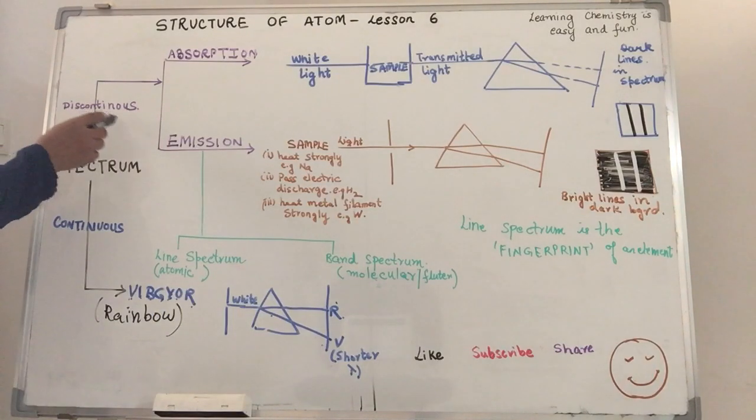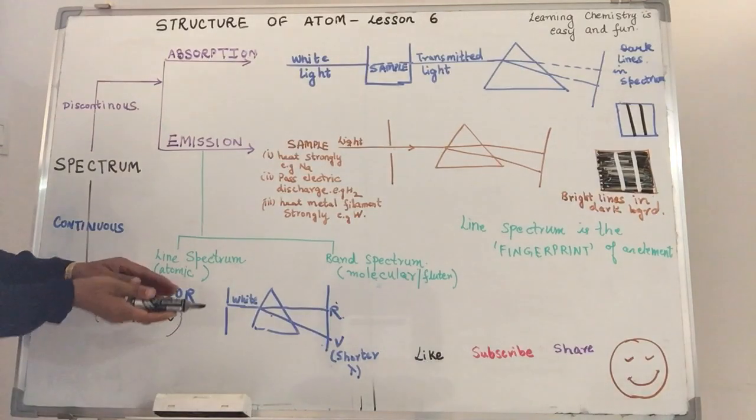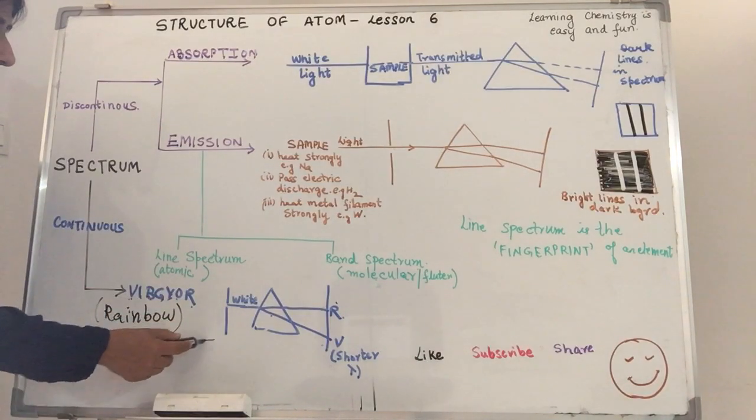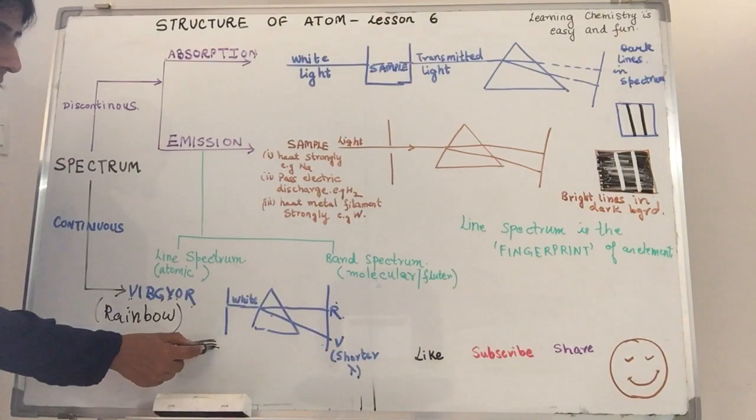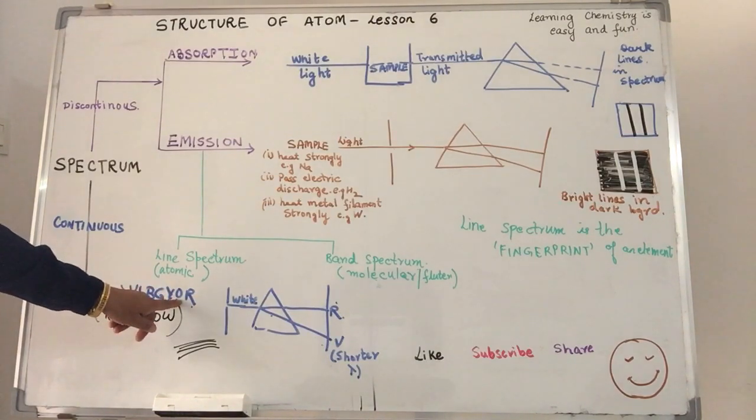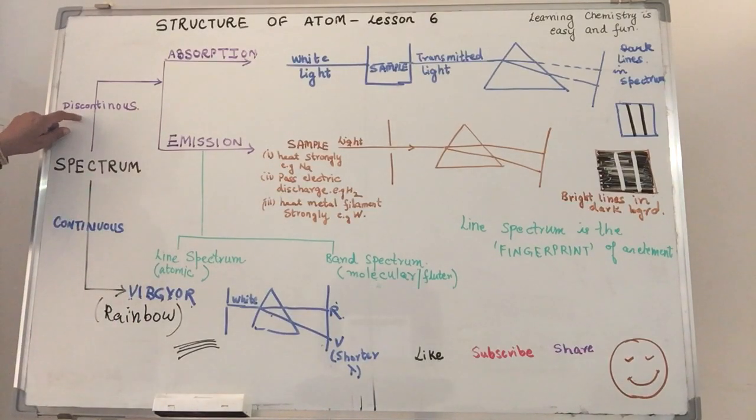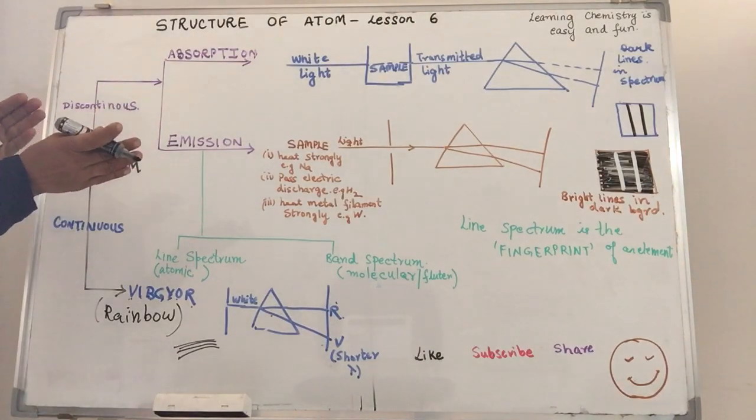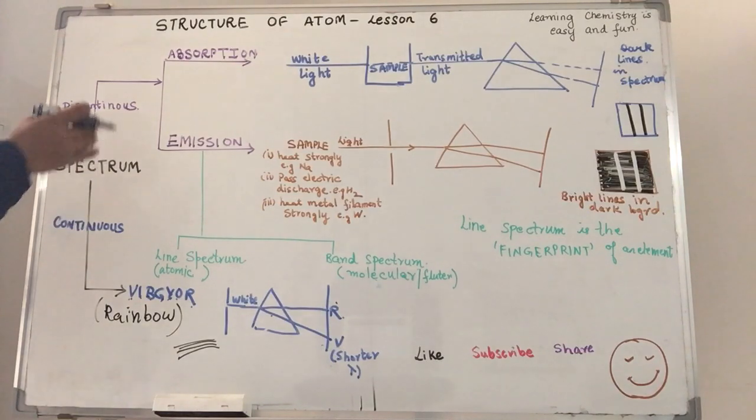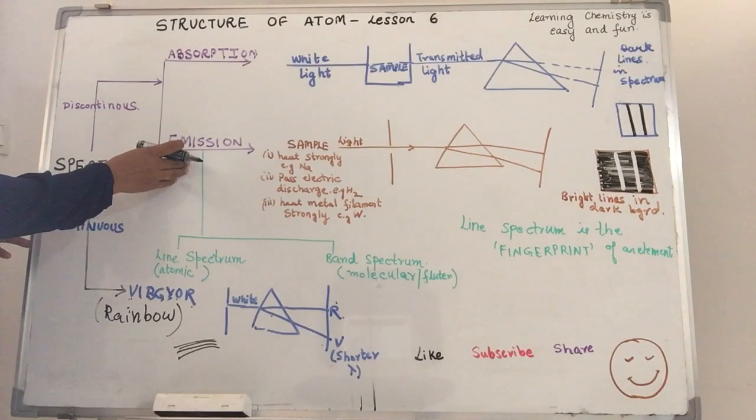Now coming to the Discontinuous Spectrum. Discontinuous means that this was called Continuous because one color merges onto the other. In the rainbow you are not able to make out where the red ends and the orange begins and where the orange ends and the yellow begins. So they are merged into one another. Discontinuous on the other hand is the spectrum where there are gaps.